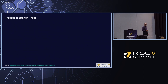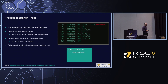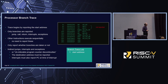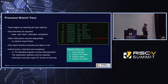Let's take a worked example. Trace begins by reporting the start address, which provides a sync point for the decoder so it can identify where in the code you are. From there, only branches, interrupts, exceptions, and so on get reported. For example, after the start address, the next couple of instructions are sequential so they're not reported. We have a branch — it's not taken. The next set of instructions are sequential, not reported. We have a taken branch. Repeat some instructions, and then finally an untaken branch. This information goes into the trace output, which allows the decoder to reconstruct what's happening.